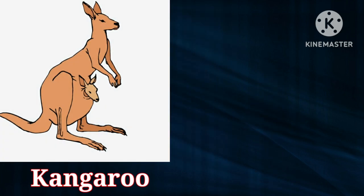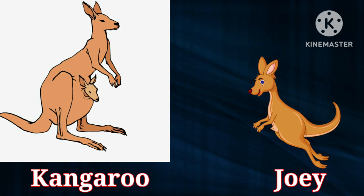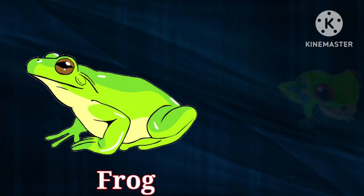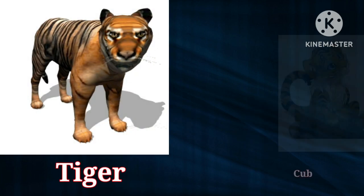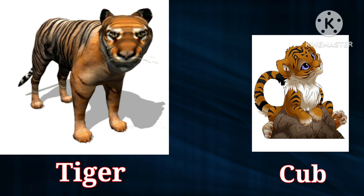Kangaroo. Joey. The baby of kangaroo is Joey. Frog. Tadpole. The baby of frog is called Tadpole. Tiger. Cub. The baby of tiger is called Cub.